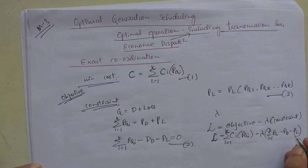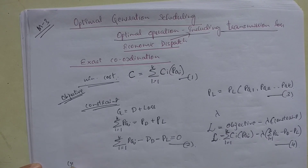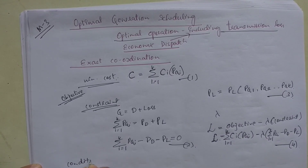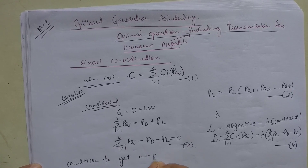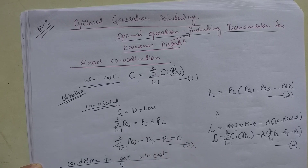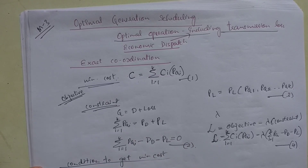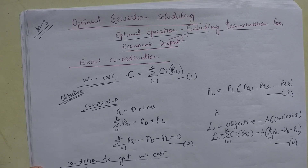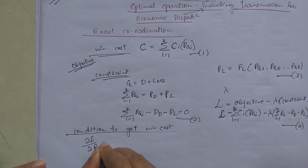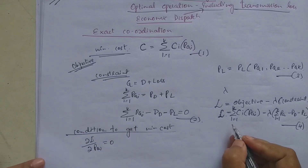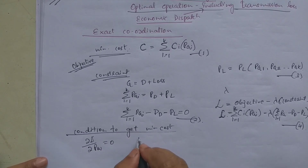This is how we solve the nonlinear programming problem — take it as equation 4. The condition to get minimum cost is that the partial differentiation of the Lagrangian function with respect to P_Gi must equal zero. When we differentiate equation 4, we get equation 5.